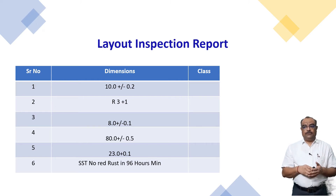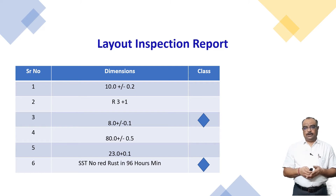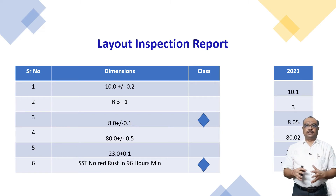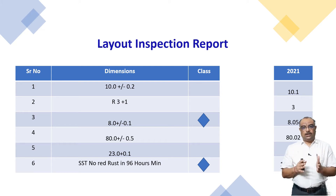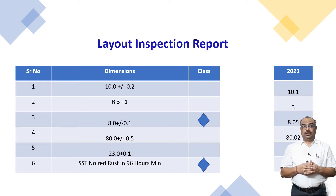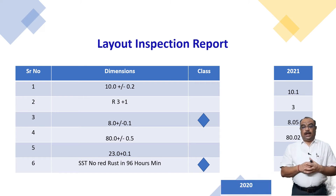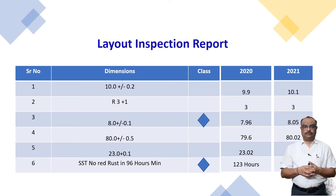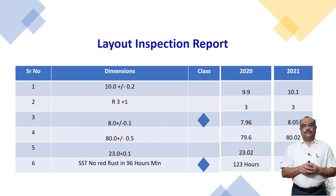For example, in 2021, I identified some special characteristics marked with a star symbol. When we did this layout inspection in 2021, all the observed values were within the specification. According to normal practices, this layout inspection report is okay. But the best practice is to also keep the data from the initial sample inspection report or PPAP submission on the left side for comparison.